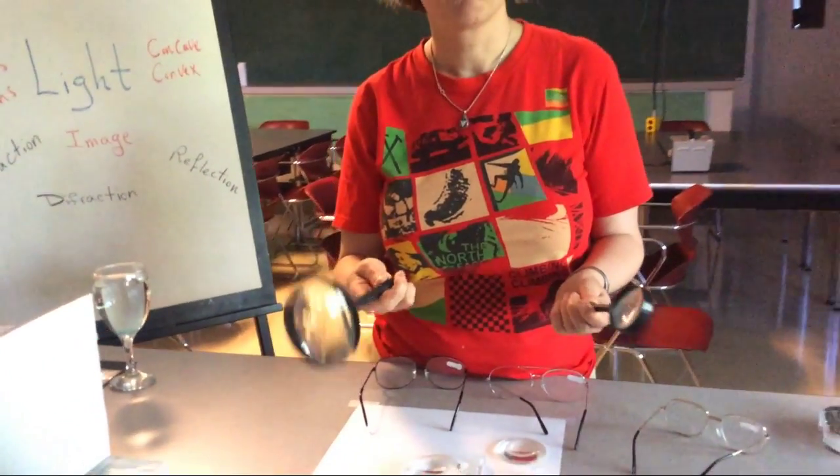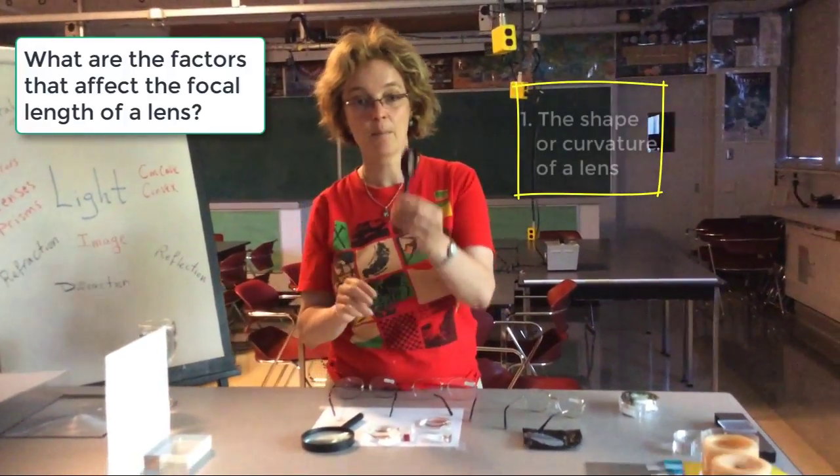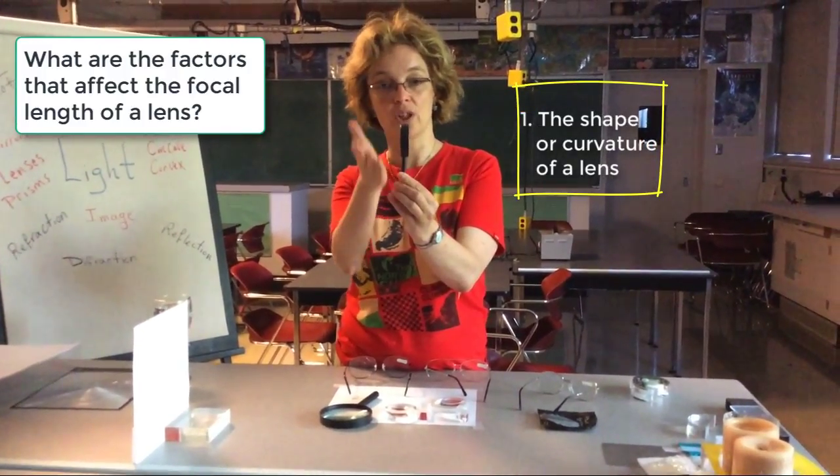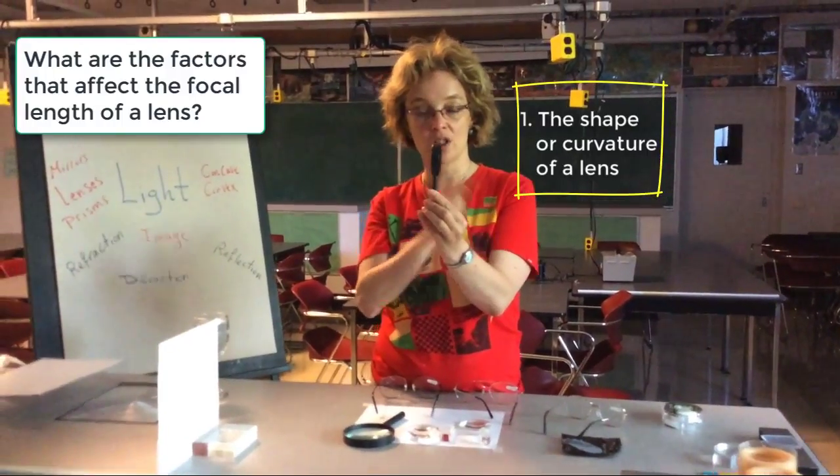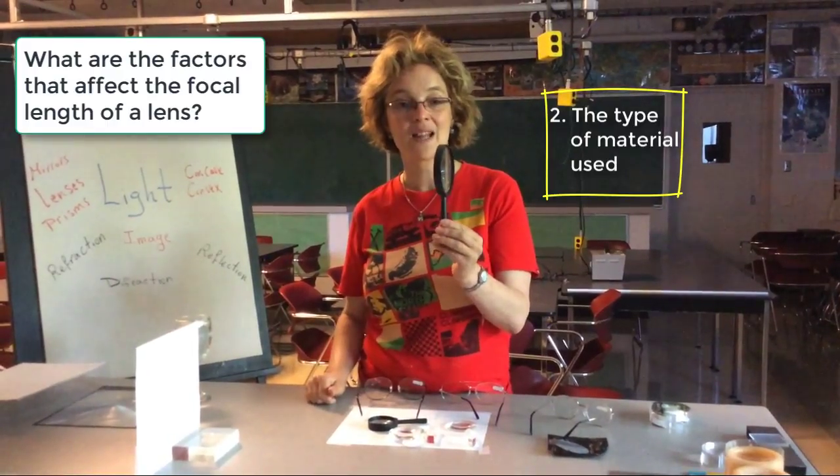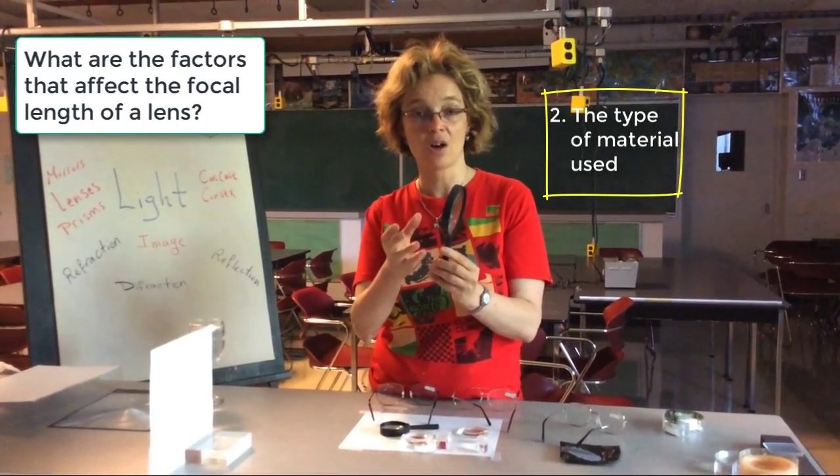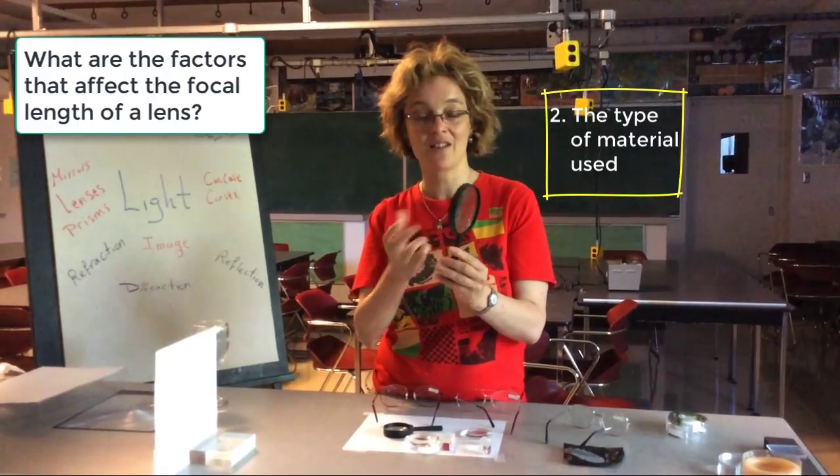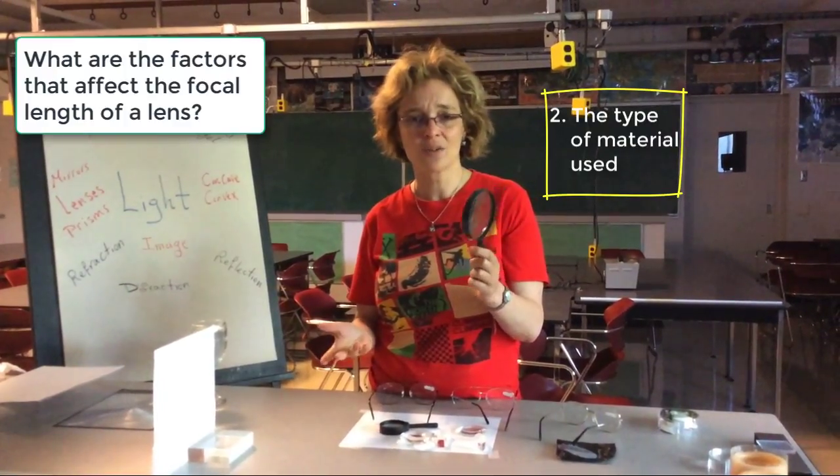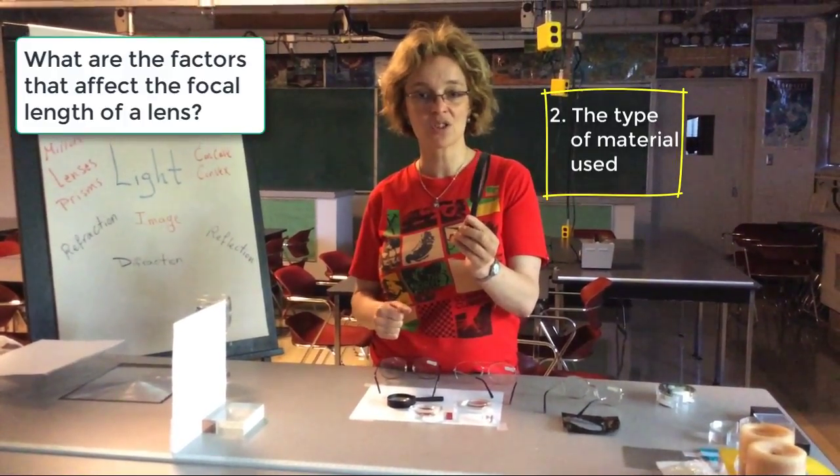So you might ask, what does the focal distance depend on? And the focal distance of a lens depends on three things. Number one, its shape. What is the radius, what are the radius, the radius curvature of both sides of the lens? The curvature is important, its number one. Number two, what matters is what the lens is made of. If the lens is made of glass or water or plastic, the indices of refraction of those materials are different. And thus, the focal ability of the lens to focus light is going to be different. And the index of refraction just shows you how much the light slows down when it's in the lens versus when it's in air.